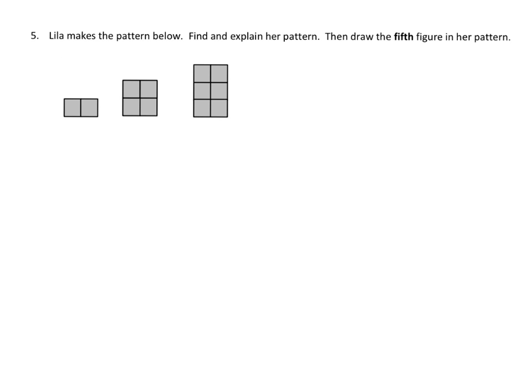The last slide for this video says: Lila makes the pattern below. Find and explain her pattern, then draw the fifth figure in her pattern. We need to look at how these shapes are growing from one figure to the next.